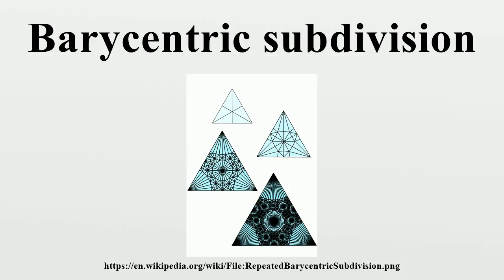In particular, the BCS of a single point consists of that point itself. The BCS of a line segment consists of two smaller segments, each connecting one endpoint to the midpoint of itself. The BCS of a triangle divides it into six triangles. Each part has one vertex at the barycenter, another one at the midpoint of some side.